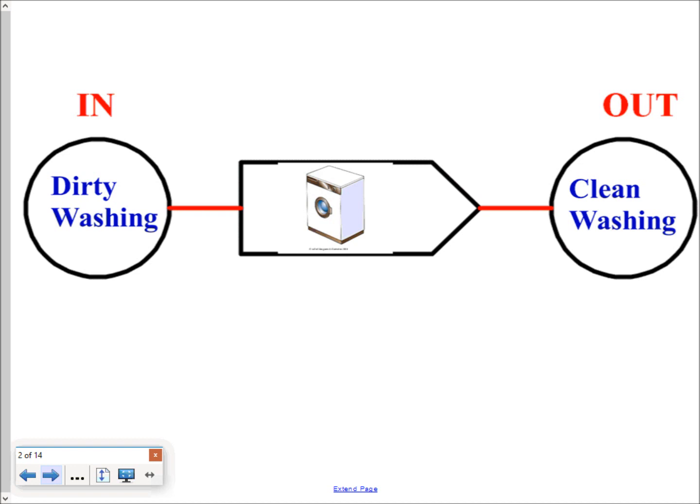What comes out at the other end depends on what gets fed into it. So if dirty socks go in, clean socks come out. If a dirty jumper goes in, a clean jumper comes out. So whatever gets fed into the machine — whatever gets fed into the function — undergoes the same process before it comes out the other end.